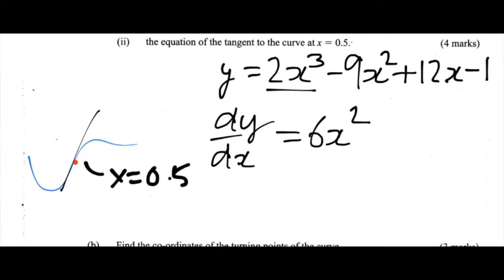That's because 2 times 3 is 6, and when we decrease the power of a cubed term, we get a squared term. Our second term for the first derivative is going to be minus 18x. That's minus 9 times by 2, and x squared, decrease the power by 1, is simply x, plus 12.